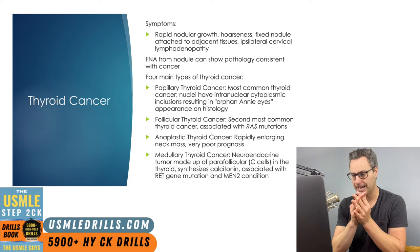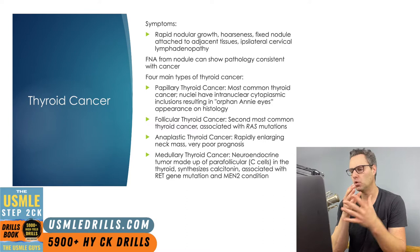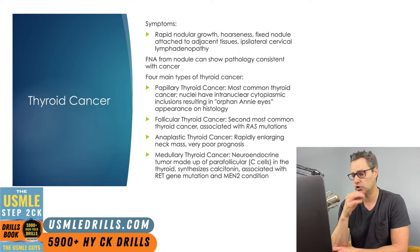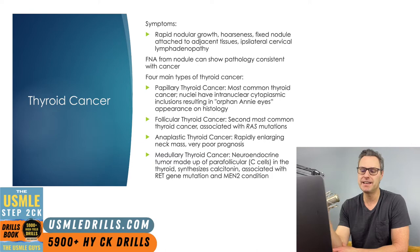Then we have anaplastic thyroid cancer — this is your worst type. It has a very poor prognosis and oftentimes you'll go straight to palliative care. Patients often present with a rapidly enlarging neck mass. The last type is medullary thyroid cancer, which is strongly associated with a RET gene mutation as well as MEN2. It's a neuroendocrine tumor made up of parafollicular C cells, and therefore it may synthesize calcitonin.